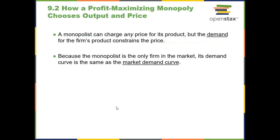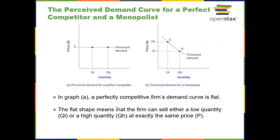Let's talk about how the monopolist actually chooses to produce. Unlike the perfectly competitive firm, the monopolist gets to choose not only how much they produce, but also the price — the monopolist can affect the price in the market. Since they can affect the price, the demand curve the monopolist faces is not the horizontal one we saw in perfectly competitive markets, but rather it is the market demand curve, which is downward sloping. The monopolist faces the market demand curve since they are the only producer.